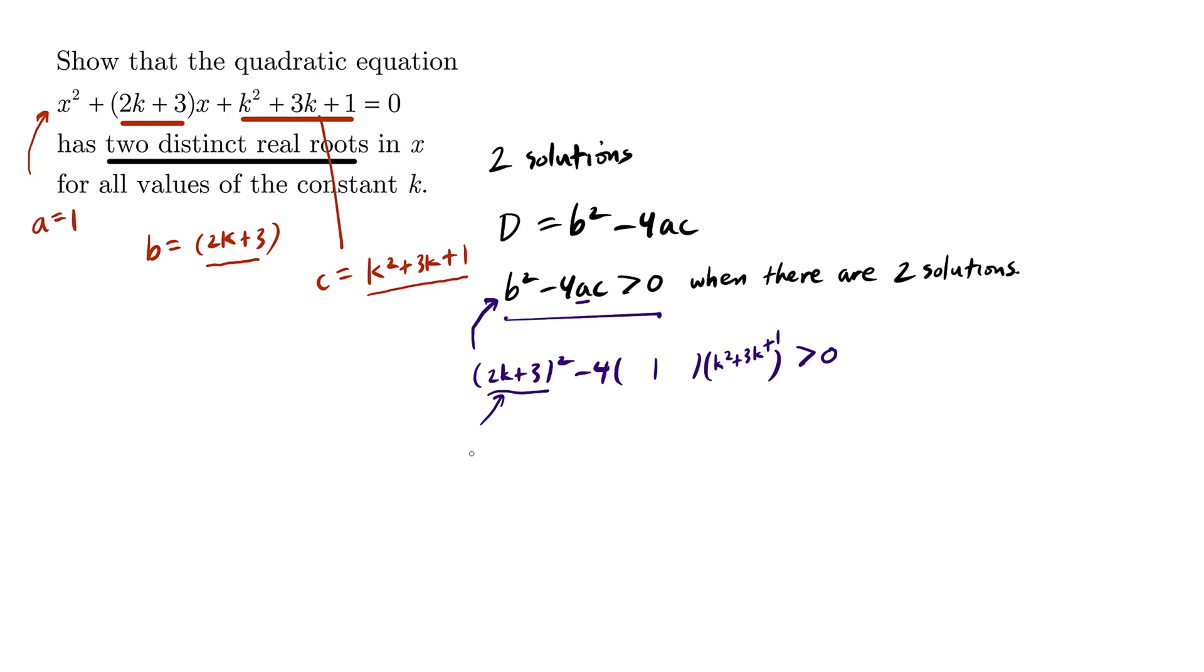Let's expand this out here. This is 4k squared plus 12k plus 9, and we have a negative 4 times this times this times this. So we have negative 4k squared minus 12k minus 4 is greater than zero.